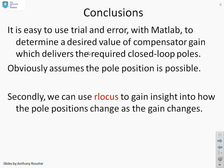So in summary, it's relatively easy to use trial and error with MATLAB to determine a desired value of compensator gain, which delivers the required closed-loop poles, obviously assuming that your required closed-loop poles are actually achievable. We can use rlocus to gain insight into how pole positions change as the gain changes. And the figures are quite useful for this.